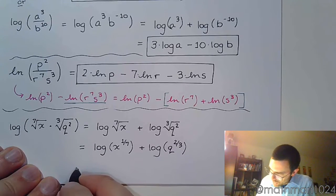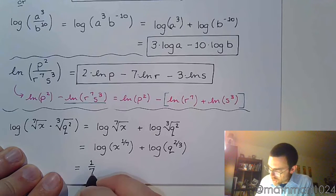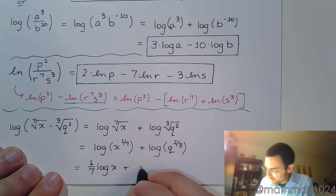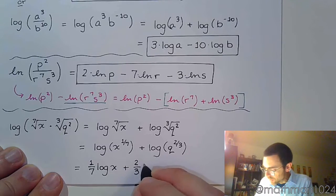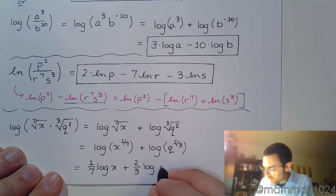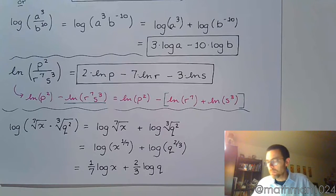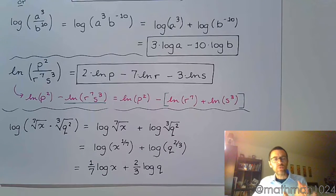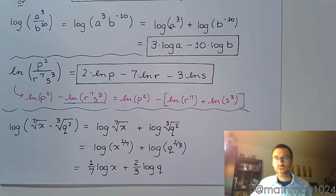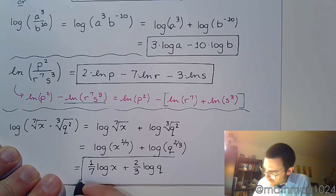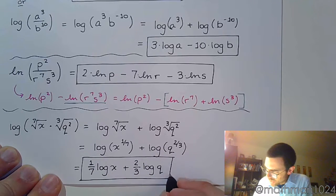And then in our final step, you write the power out in front. So it can say 1/7th times the log of x plus 2/3rds times the log of q. One of the things to keep in mind here is that log, natural log, those guys are never by themselves. They are functions and there's always going to be some kind of input value. It's just like you never see a square root symbol by itself. There's always something inside of it because it's a function. Alright, so this is how we expand logarithms.